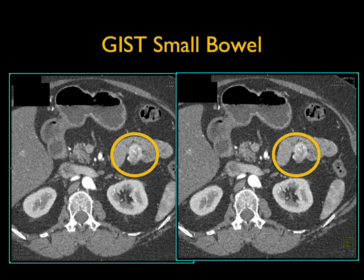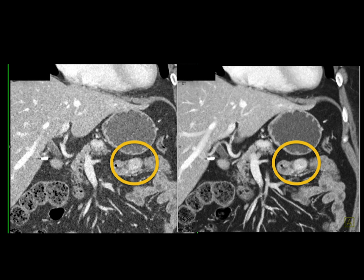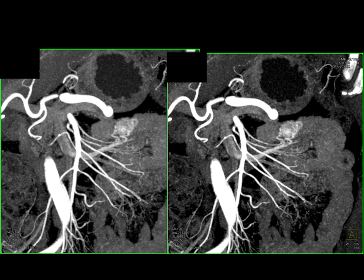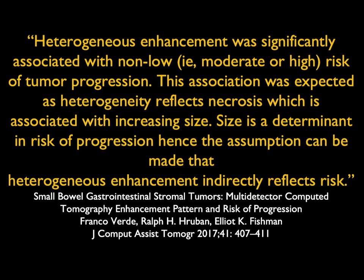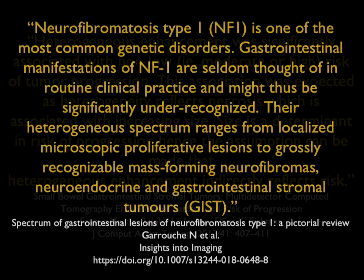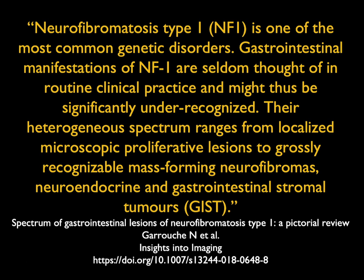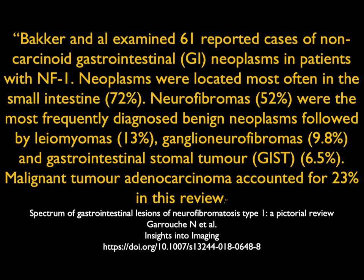Another example with GI bleeding showed an exophytic tumor — appearing intraluminal on one scan but clearly exophytic on a prior scan — with MIP showing it to be very vascular, classic for GIST. A published article made the point that heterogeneous enhancement is associated with non-low risk of tumor progression, as heterogeneity reflects necrosis and is associated with increasing size. In neurofibromatosis type 1, GIST tumors are seen more commonly; an article examining 61 cases of non-carcinoid GI neoplasms in NF1 patients found neoplasms most commonly in the small bowel, with neurofibromas being the most frequent diagnosis.